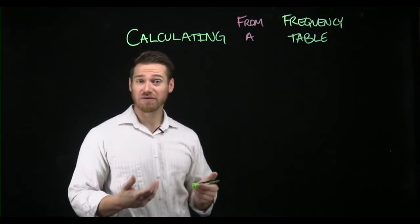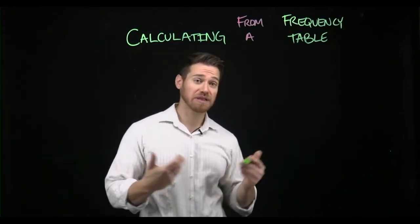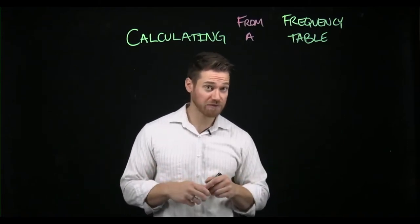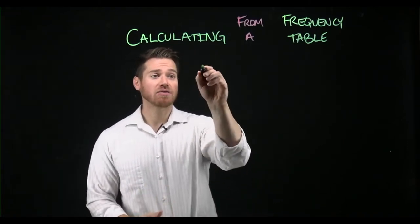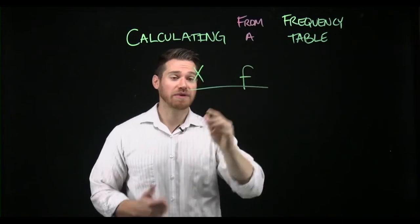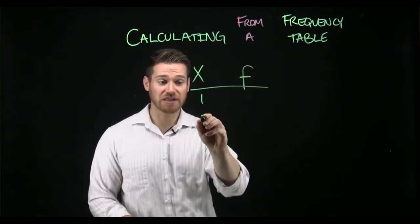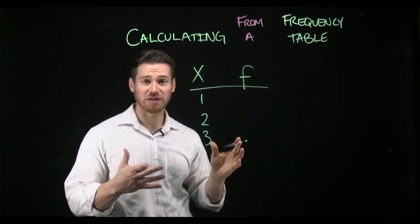All right, so with a frequency table, there are other things that we might see besides simply the X scores and the frequency that they occur in. So again, a basic frequency table will always have at least these two elements. So this time, I'm gonna go in ascending order. We're just gonna make up some numbers for simplicity's sake.